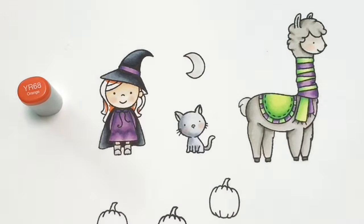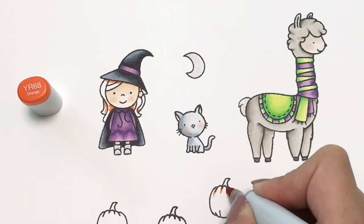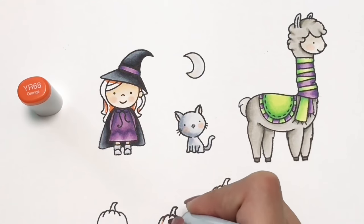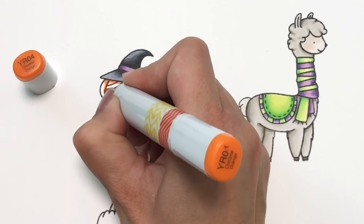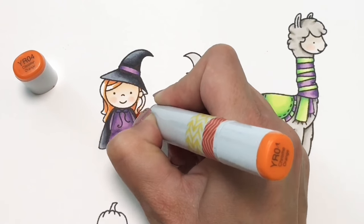Both of these stamp sets are so cute. And the price point, you cannot beat the price point on these smaller, neat and tangled. And you get so much. You get a sentiment, at least one sentiment. Sometimes you get some little extra little words too.